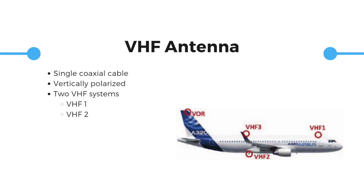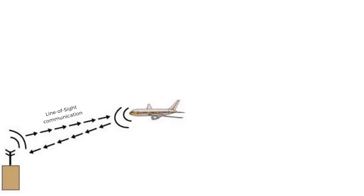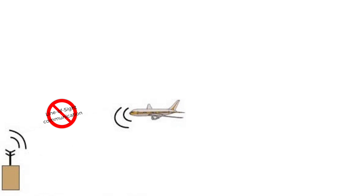As usual, there are two systems installed on the aircraft: VHF-1 and VHF-2. VHF-3 is optional and is on standby with ACARS. In most aircraft, VHF-1 and VHF-3 antennas are attached on the upper fuselage, whereas the VHF-2 antenna is attached to the lower fuselage. Since VHF communication is line-of-sight, let us consider an aircraft flying at 10,000 feet from the surface of the earth, with point B being where the VHF signal is received by the tower, neglecting the height of the tower, and d being the distance the signal travelled.